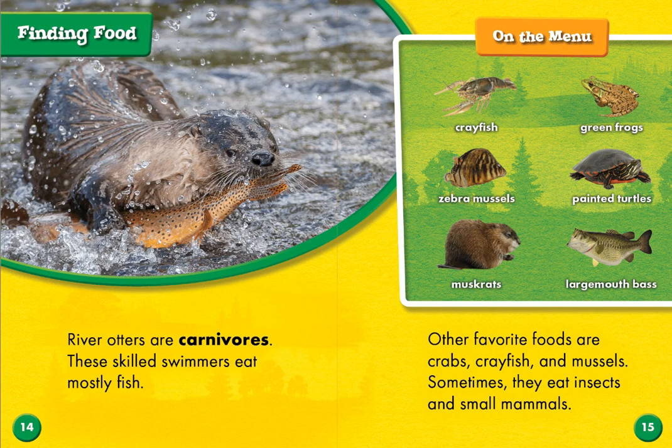River otters are carnivores. These skilled swimmers eat mostly fish. Other favorite foods are crabs, crayfish, and mussels. Sometimes they eat insects and small mammals. What do you think the word carnivore means? It means they eat meat. Herbivore means they eat plants — that's what beavers are. But river otters are carnivores; they eat meat.